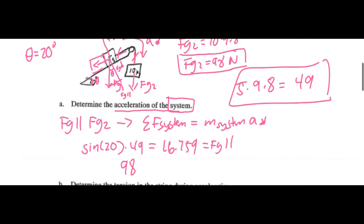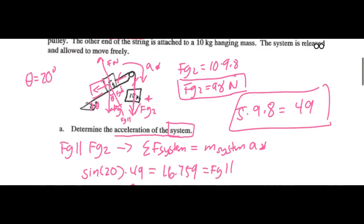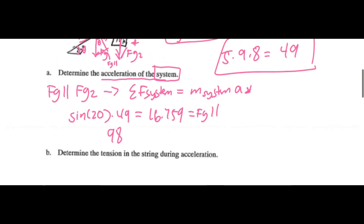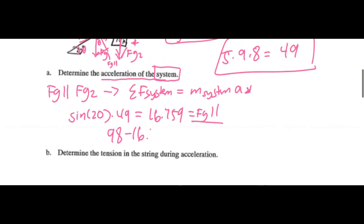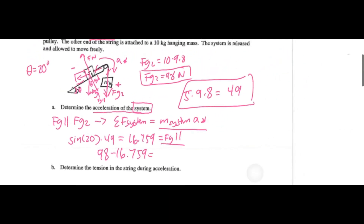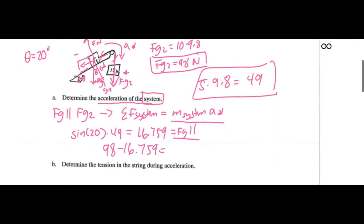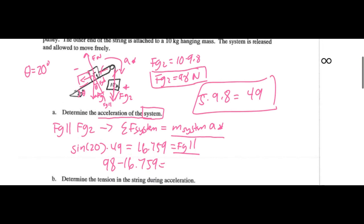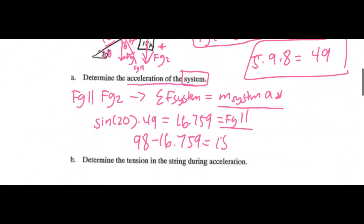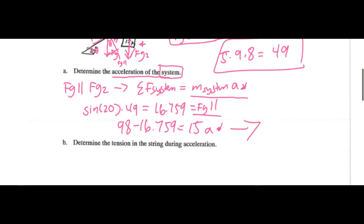So we have 98 newtons. This is a sum of the forces: the 98 is acting in the positive direction and FG parallel acts in the negative direction. So 98 subtracted by FG parallel, which is 16.759, is equivalent to the mass of the system times acceleration in the star direction. The mass of the two objects is 5 plus 10, which is 15. So acceleration equals 5.160 meters per second squared.